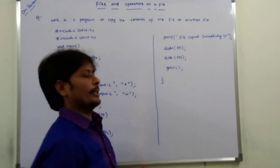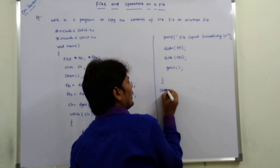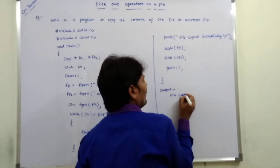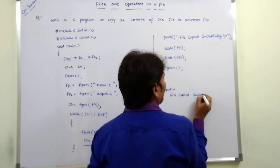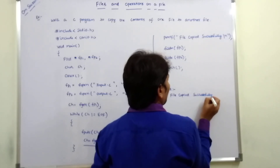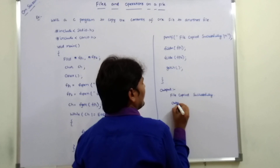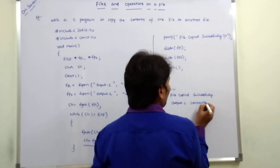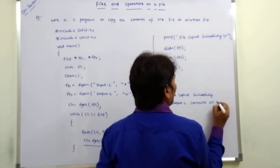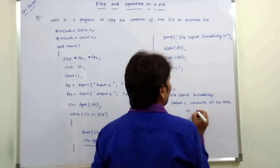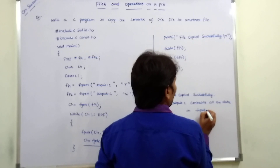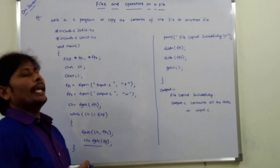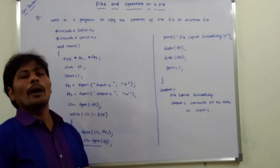Then getch, and the program is closed. The output is file copied successfully. The output.c file now contains all the data from input.c. This is the program for copying the contents from one file to another file.